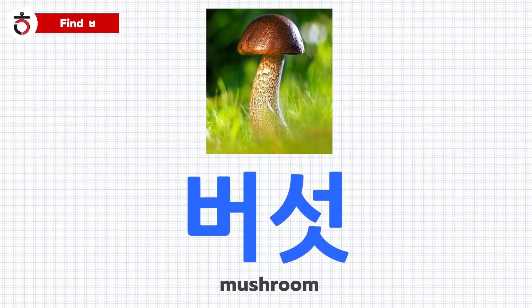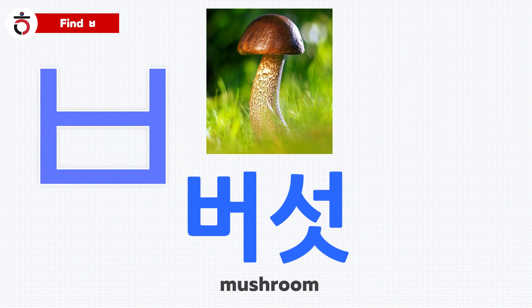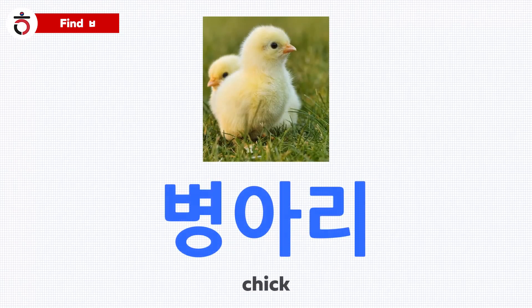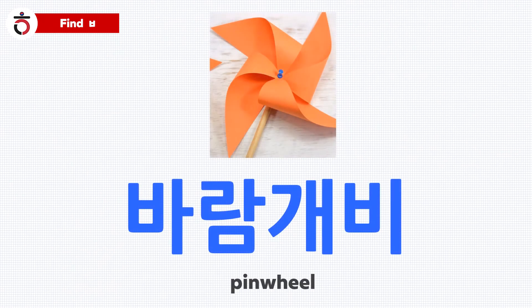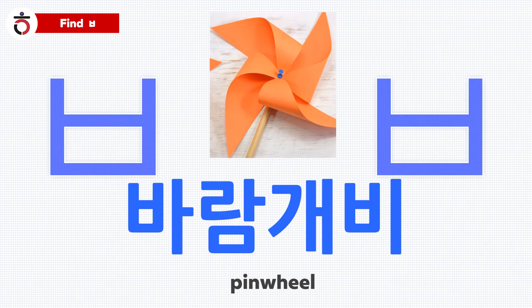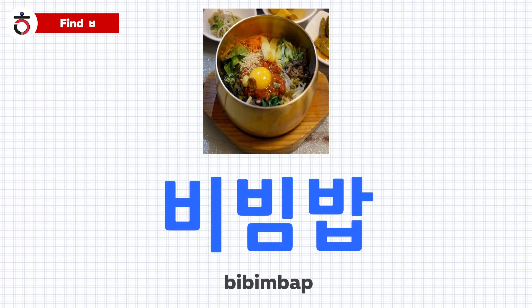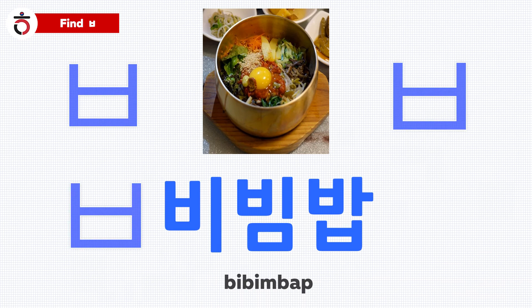For example, in 버섯, there is only one 비읍. Then how many 비읍 in 병아리? That's correct — there is one 비읍. In 바람개비, there are two 비읍s. In 비빔밥, there are four 비읍s.